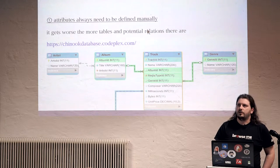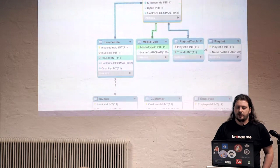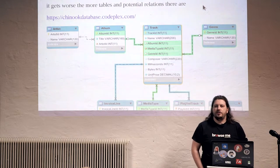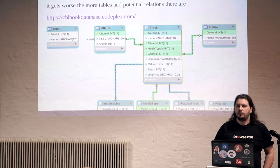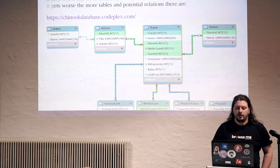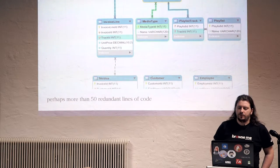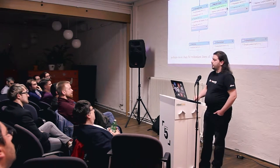The Getting Started example only had two tables. Let's look at this example database — it has 11 tables. This is called Chinook, which is a successor to the Northwind database. It comes with decent-sized sample data and schema which you can try out in different kinds of software. I want to concentrate on just these three tables at the top. If you want to use them in Waterline, you have to write at least 50 more lines of code writing all these definitions, which already exist in the database, manually.